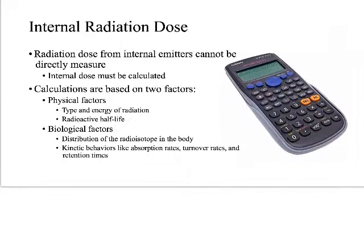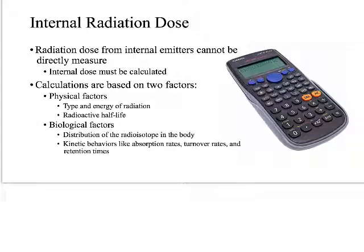Let's talk about how this stuff affects the insides of our body. We can't directly measure this — which is the bad news — we have to calculate it. Generally we do not calculate it on a scientific calculator. The calculations required are three-dimensional, even four-dimensional because they're occurring over time at a certain activity rate, happening in specific organs, and each one of those organs has its own tissue weighting factor.